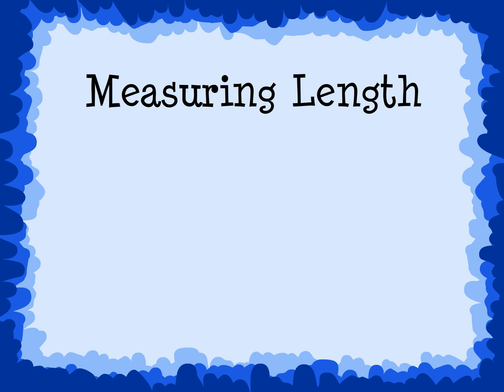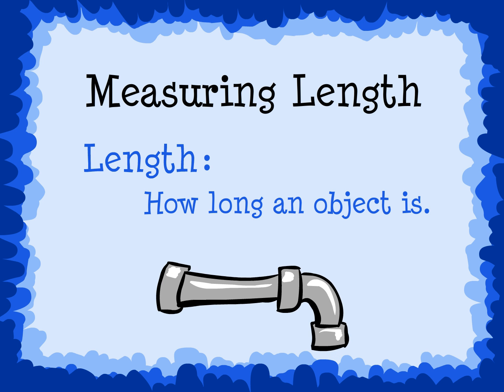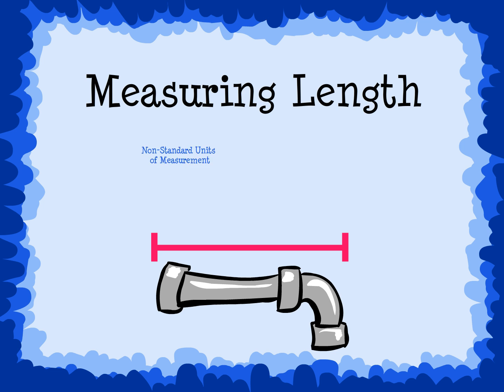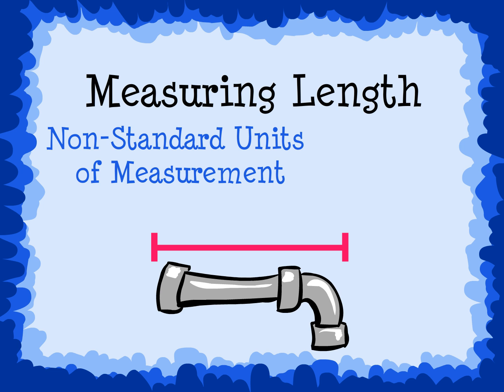Measuring Length. One way to measure an object is to find its length. Length is how long an object is. There are two types of measurement for length: non-standard units of measurement and standard units of measurement.